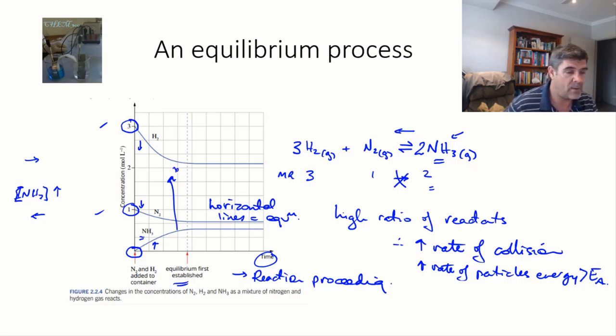This is how we use our understanding of collision theory of particles bouncing into each other, creating chemical reactions. And the fact that this occurs not just between the particles of the reactants, but also the particles of the products, until the rate of both the forward and reverse reactions are identical. And then we have equilibrium.